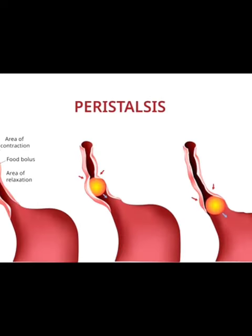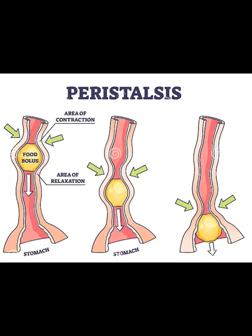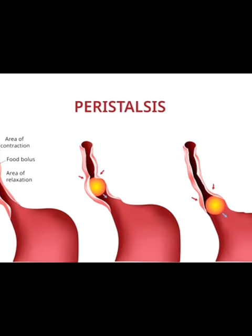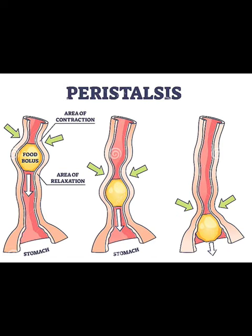Peristaltic waves begin as weak contractions in the stomach and gradually become stronger as they approach the distal stomach regions. The waves help to mix the contents of the stomach and force food to the small intestine. Two to three waves are usually present at the same moment in different parts of the stomach, and roughly three waves occur per minute.